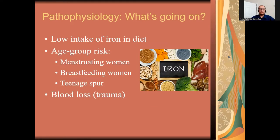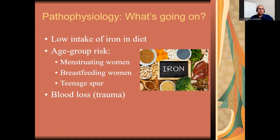Now for pathophysiology — what is really going on? How do we get iron deficiency anemia? First, there is a low intake of iron in the diet, usually from not eating enough iron-rich foods. You also have to consider the age groups prone to risk because of blood loss. For example, menstruating women on a monthly basis lose blood through their menstrual cycle, and if they are not keeping check with their iron and energy levels, that could lead to a deficiency.